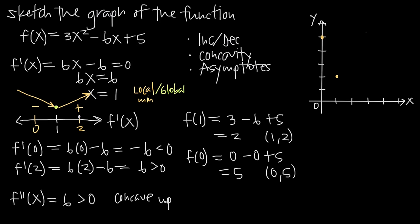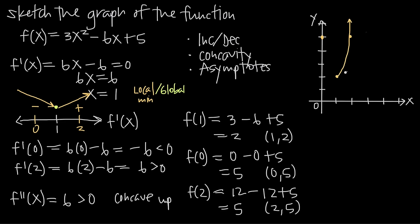Let's also plug in x = 2: f(2) = 3(2)² - 6(2) + 5 = 12 - 12 + 5 = 5, giving the point (2, 5). What we see emerging is a parabola — concave up everywhere, opening upward across its entire domain. The point (1, 2) is the global minimum. The function decreases from negative infinity to x = 1 and increases from x = 1 to positive infinity, with no asymptotes.